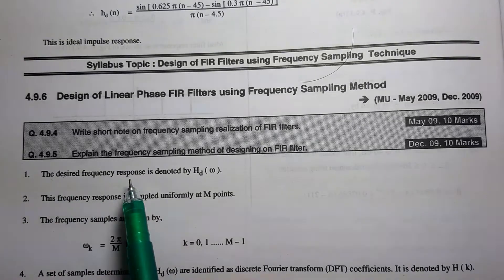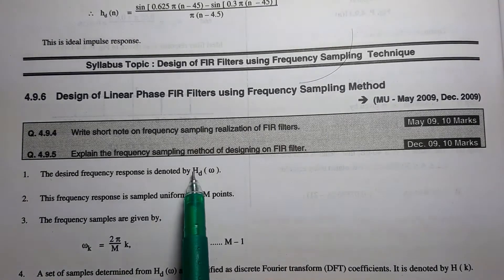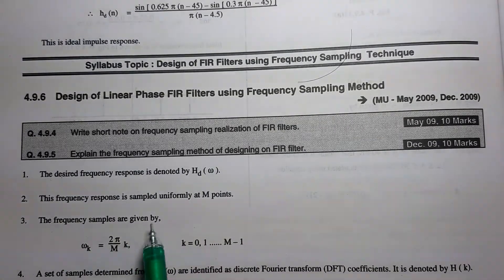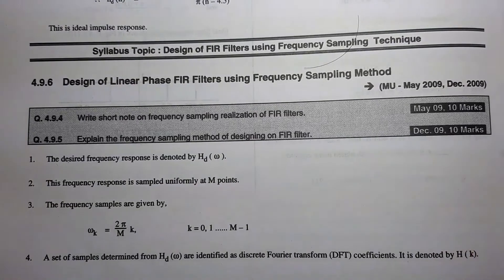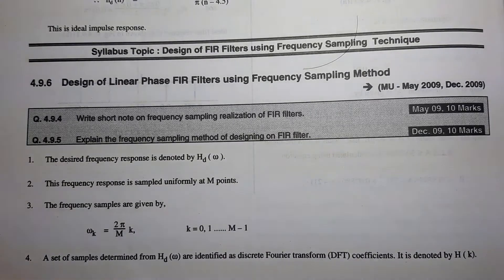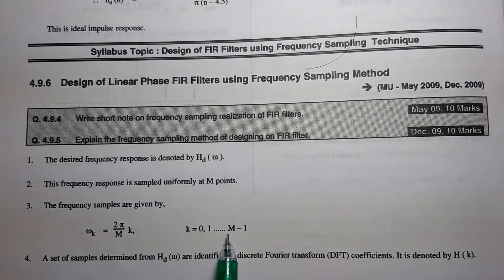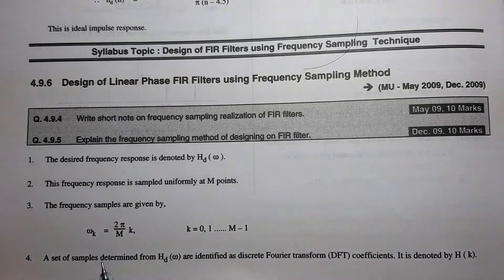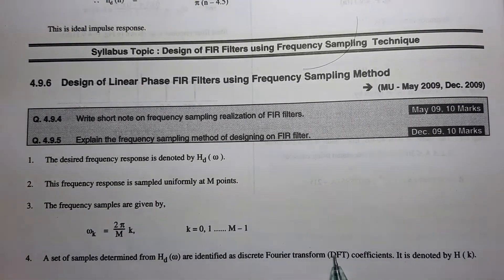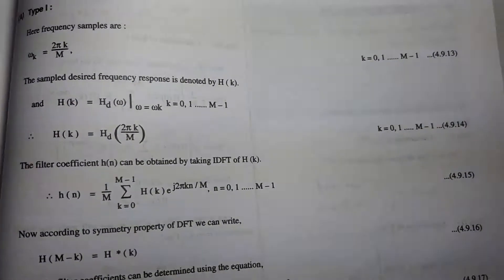First of all, the desired frequency response is denoted by HD(ω). This frequency response HD(ω) is sampled uniformly at M points. The frequency samples are given by ωk = 2π/M × k, where M defines the number of samples, and k = 0, 1, ... up to M−1. The set of samples determined from HD(ω) are identified as discrete Fourier transform coefficients, denoted by H(k).